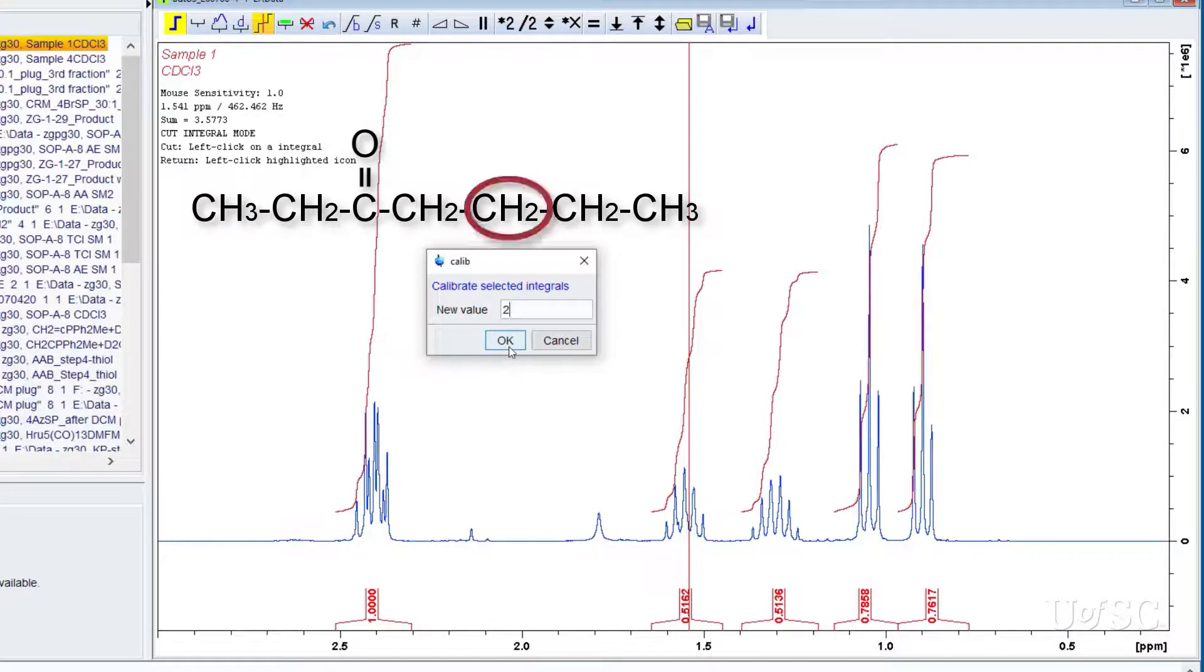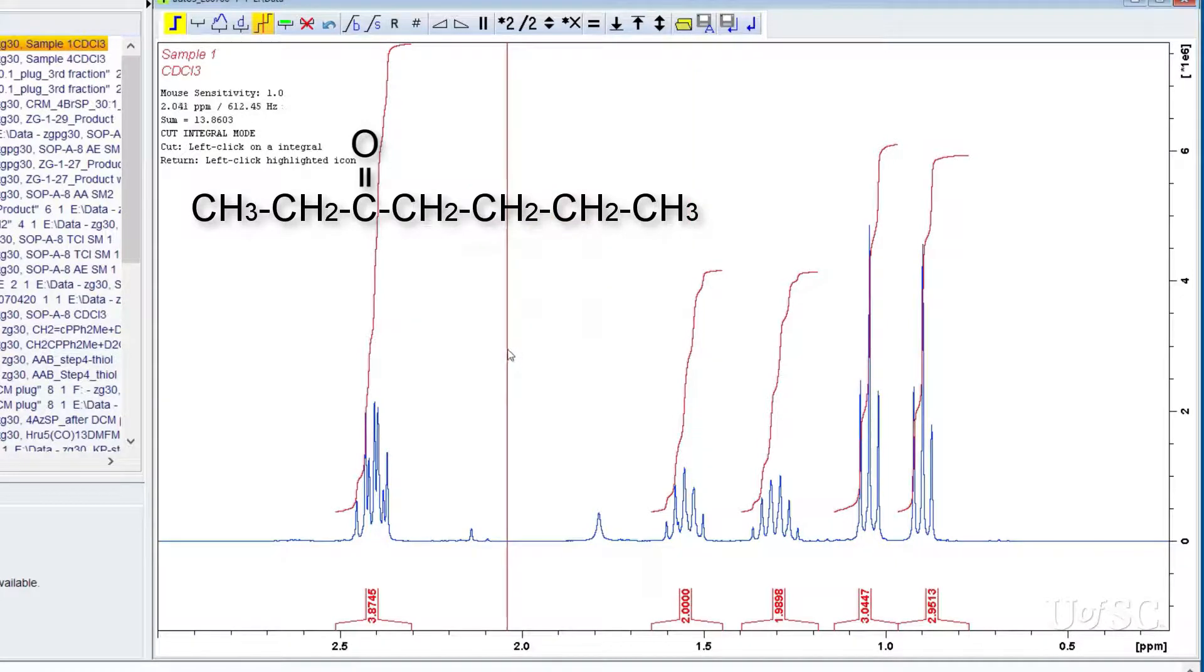In this case this is a peak from a methylene proton so I will set it to 2. Click OK. All the integrals should change to be in proportion with the calibrated region.